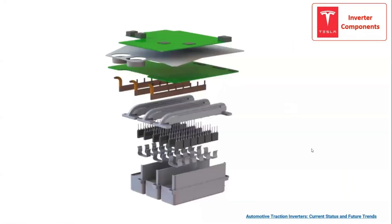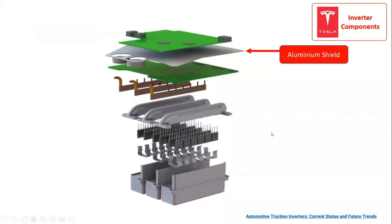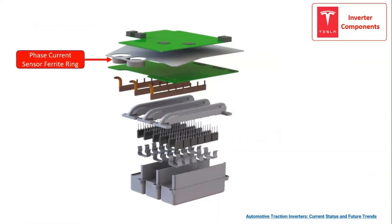The inverter structure of the Tesla Model S is shown in three dimensions. On the topmost layer of the inverter structure, we have the control board, which coordinates the flow of voltage and current in the inverter topology. After the control board, we have an aluminum shield that separates the control board from the phase current sensor ferrite ring.